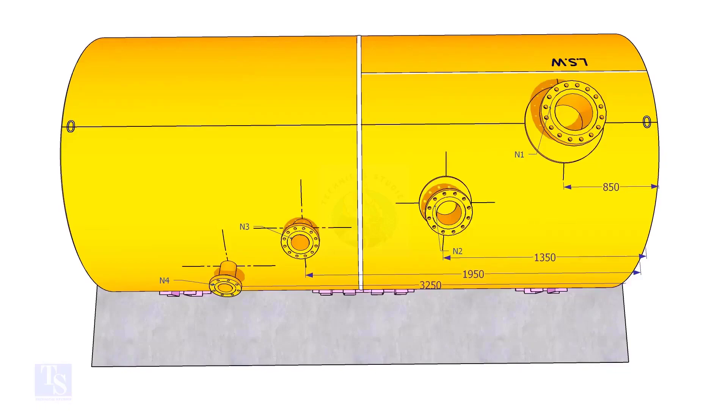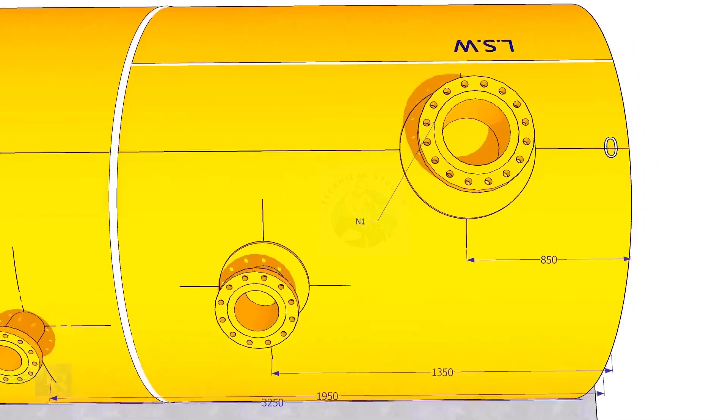Extend the nozzle N1 center line up to the other end of the shell, and mark it as zero degree.